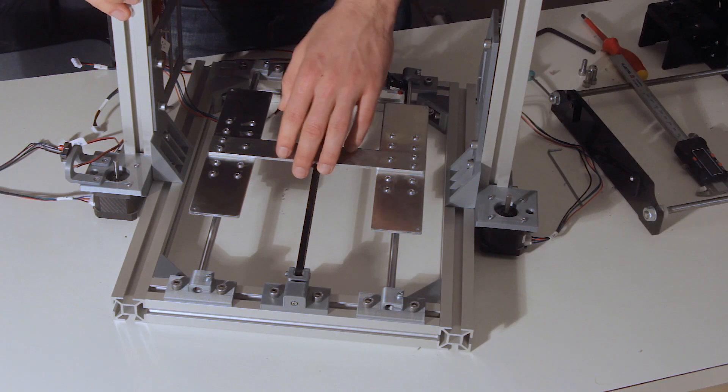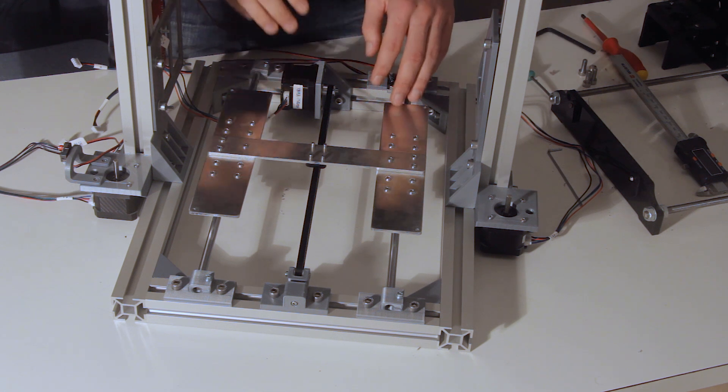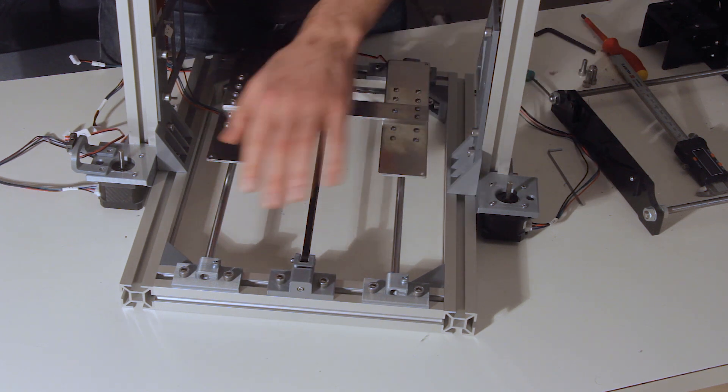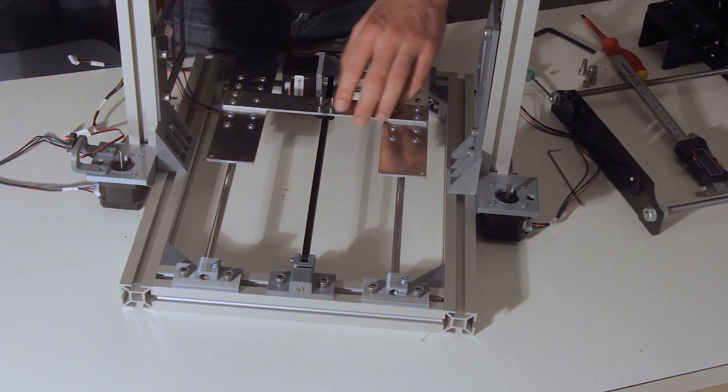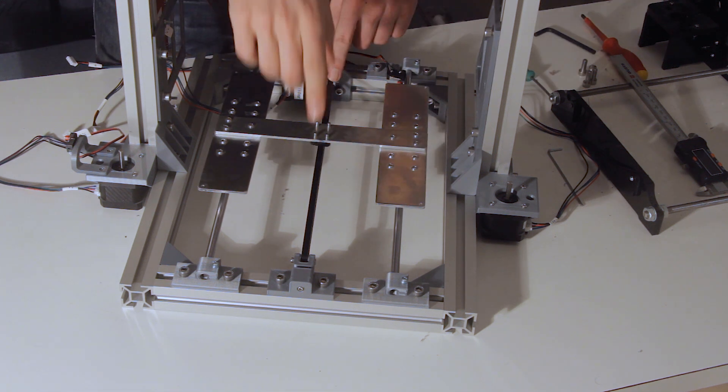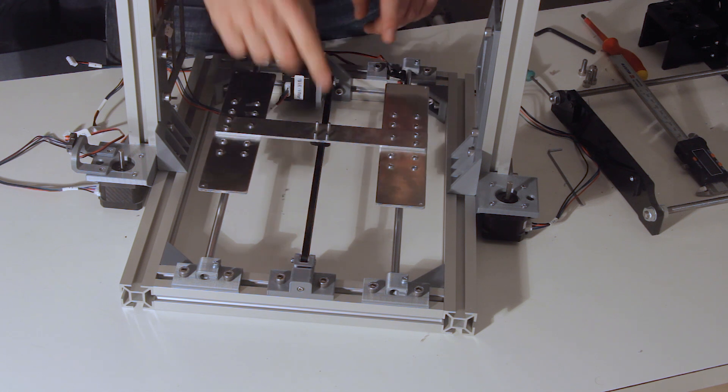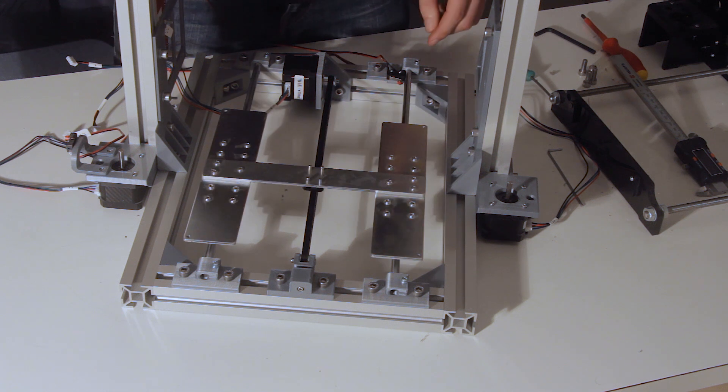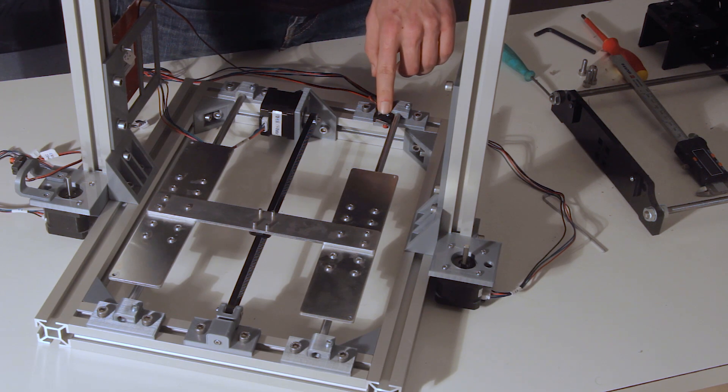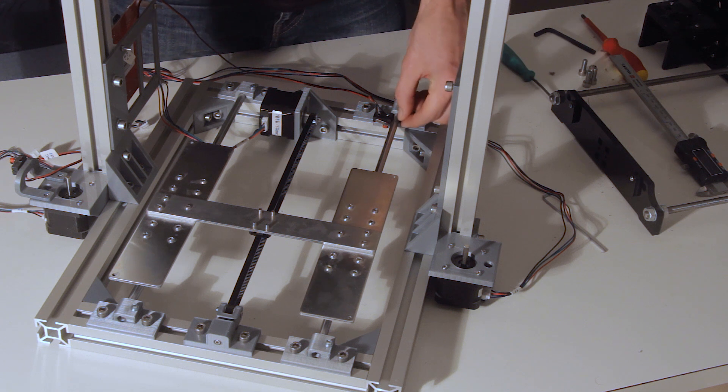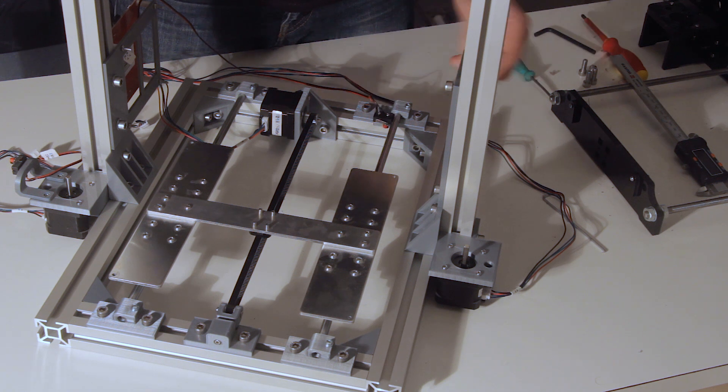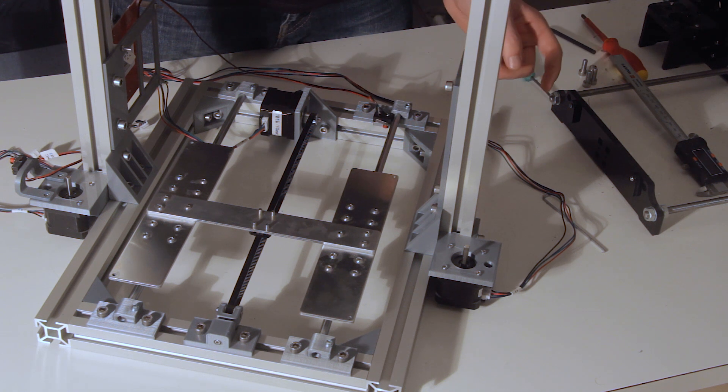Now that we have the Y-axis mostly built up, there are a few things I would like to point out. Firstly you have to make sure that those two rods are perfectly parallel to each other, otherwise it won't go smoothly. Those two pulleys which drive the belt have to be lined up perfectly so that the belt doesn't wander around. And this end switch for the Y-axis, the holes for it are actually really close to the linear rod here so that you have to bend it a little bit so that it works. You just take pliers, bend it a little bit and it should work just fine.